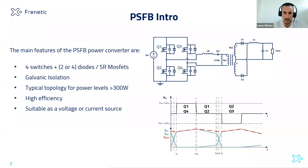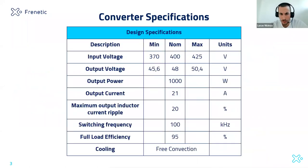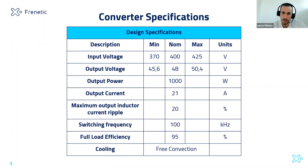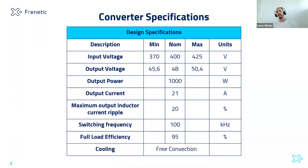Let's go for an example. We are going to focus this webinar on the design of a 1 kW converter. The input voltage is coming from a PFC, so the DC-link has a range from 370 V to 425 V. The output voltage of our battery has a nominal voltage of 48 V, so the output current is 21 amps. The ripple is 20%, switching frequency is 100 kHz, and the target efficiency is 95% with free convection.